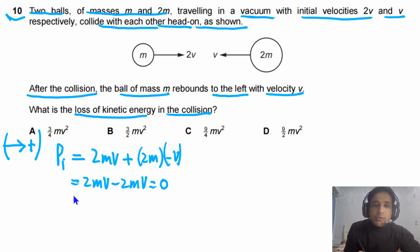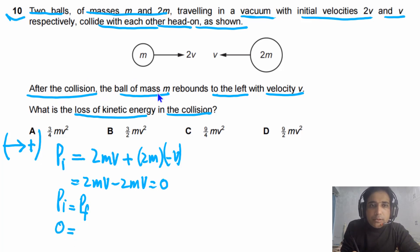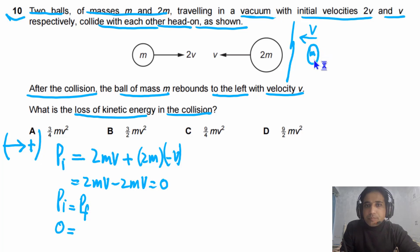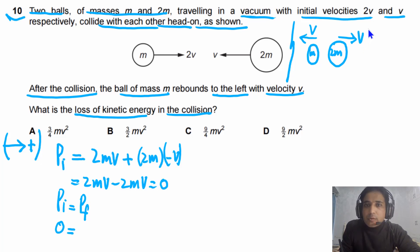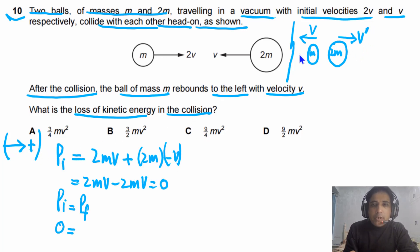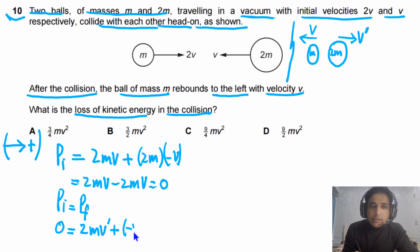Since initial momentum equals zero, the final momentum also has to be zero by conservation of momentum. After the collision, ball m rebounds to the left with velocity v. This means ball 2m must move to the right — call its velocity v prime — so that total momentum remains zero. The momentum equation gives: 2m v prime minus mv equals zero.